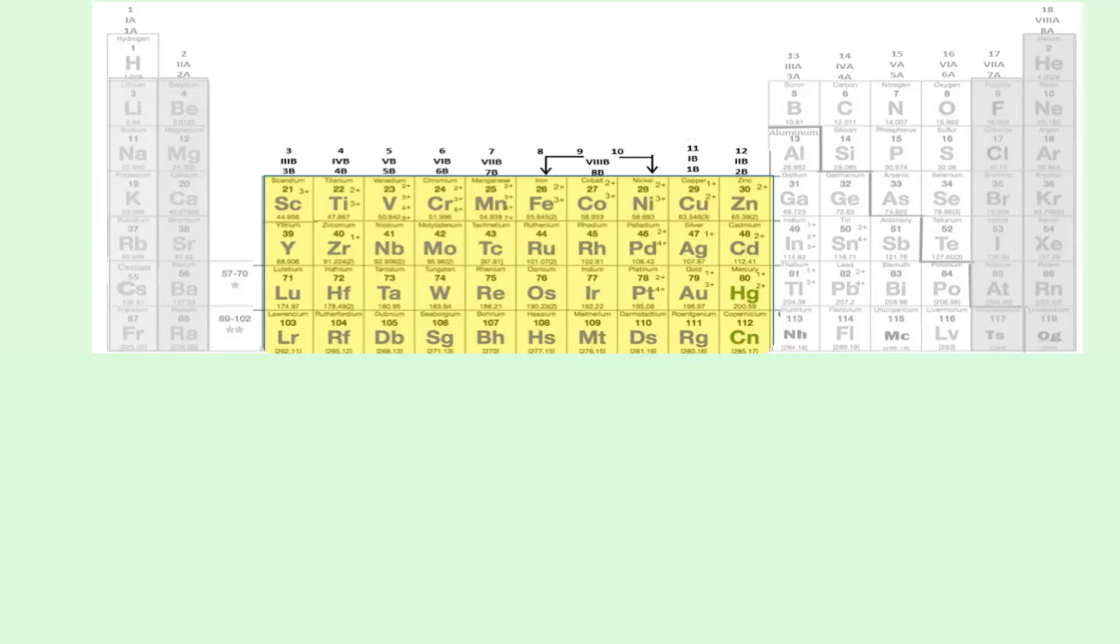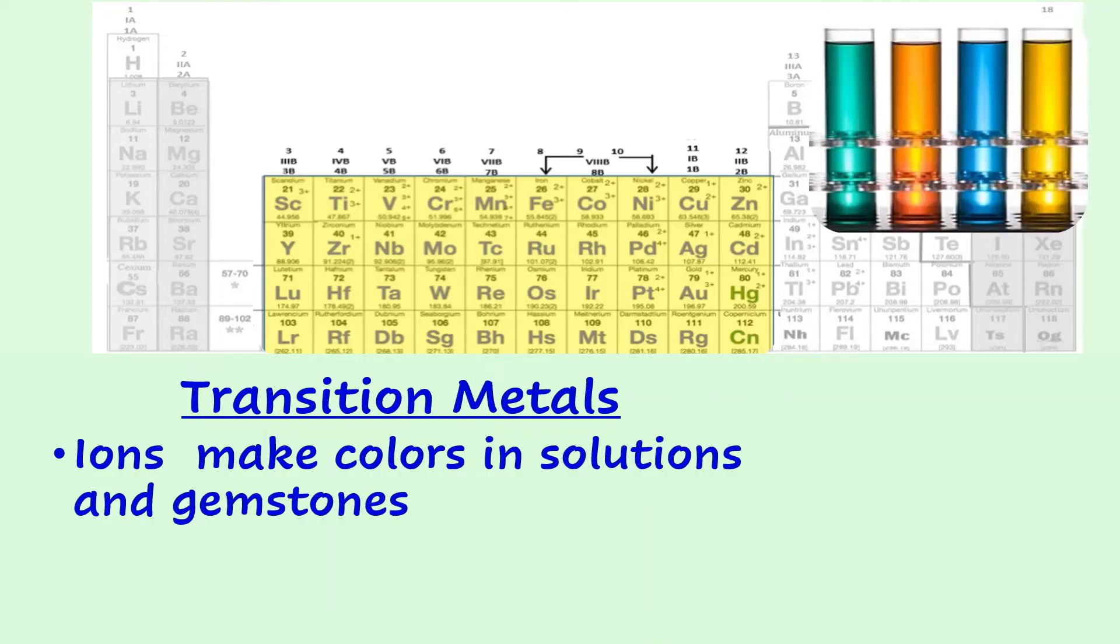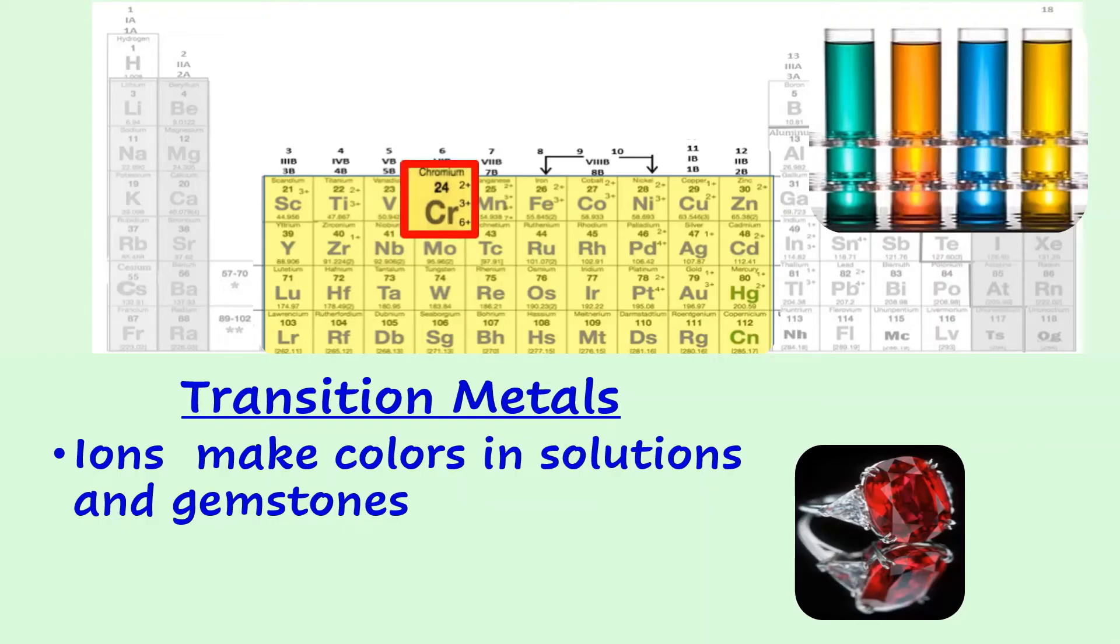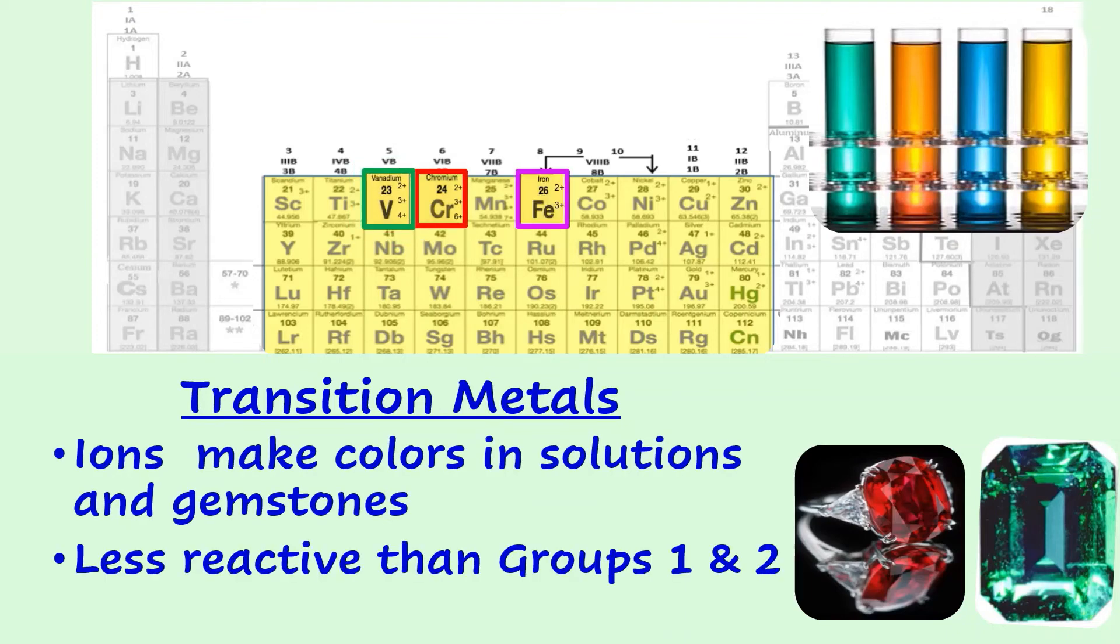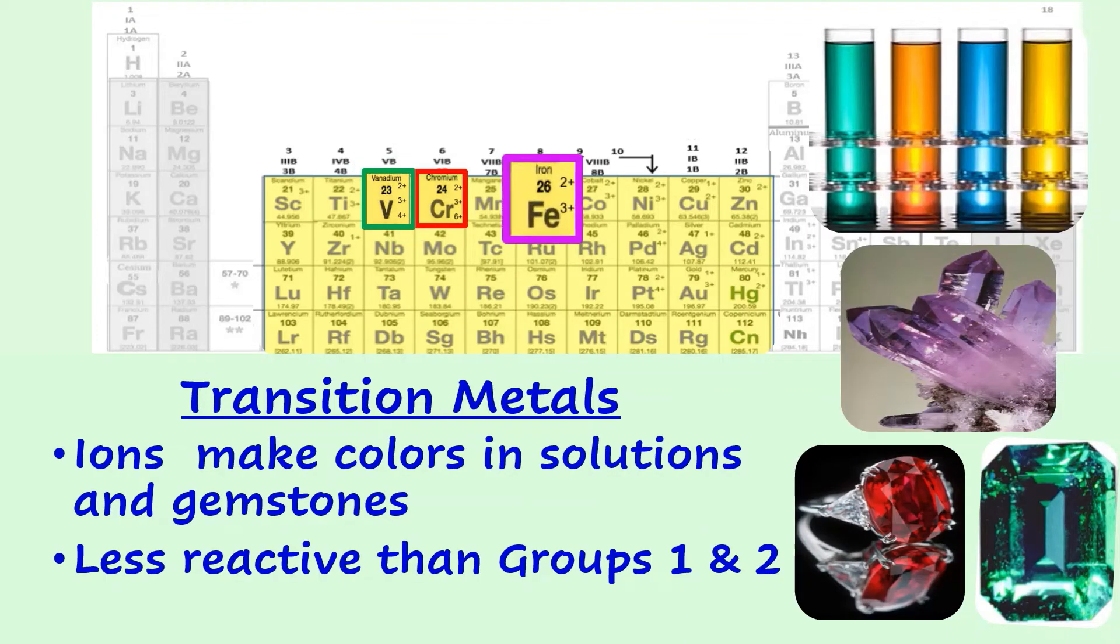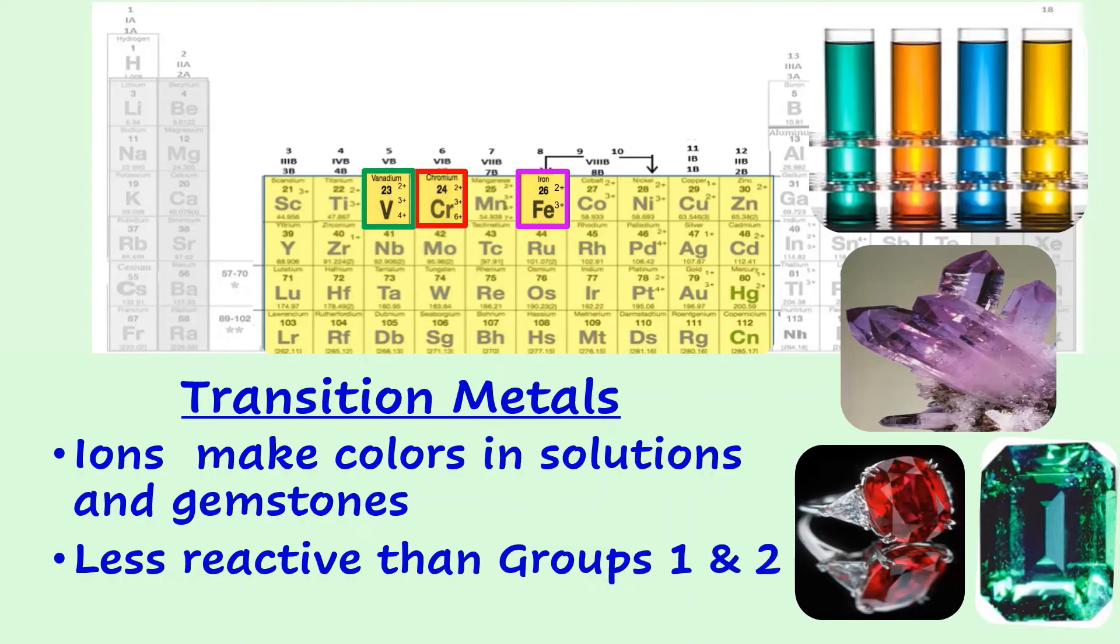Transition metals make up groups three through twelve. Ions of the transition elements create colors in solutions and gemstones. The red in rubies is due to trace amounts of chromium. Emerald's green color is caused by chromium and vanadium, while the purple in amethyst is from iron impurities. Transition elements are less reactive than elements in groups one and two, making them ideal choices for coinage, jewelry, and building materials.